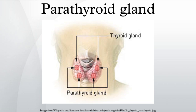The parathyroid glands are derived from the epithelial lining of the third and fourth branchial pouches, with the superior glands arising from the fourth pouch, and the inferior glands arising from the higher third pouch. The relative position of the inferior and superior glands, which are named according to their final location, changes because of the migration of embryological tissues.